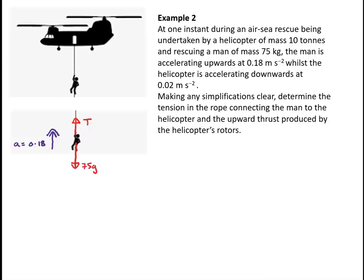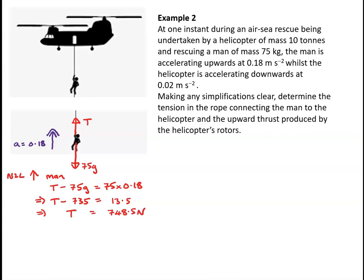First, let's consider the man. The forces acting on him are the tension in the rope and his weight. He's accelerating upwards at 0.18 meters per second squared, so applying Newton's second law upwards: T minus 75g must equal 75 times 0.18. So T minus 735 equals 13.5, giving T equal to 748.5 newtons.